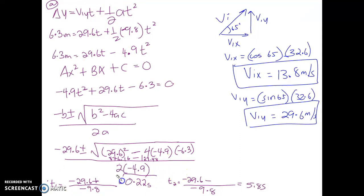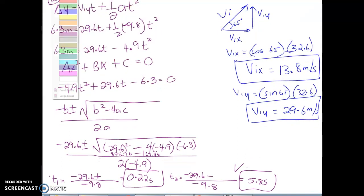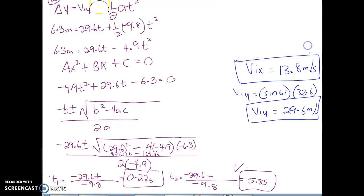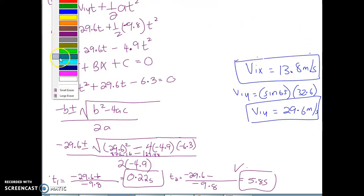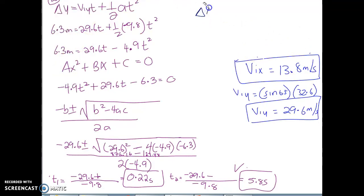All right, so those are our two times, and we're going to use our larger time right here to figure out what we need to do next. So once we've got our time, we're going to be figuring out our range, delta x, which equals VIX times t. VIX, of course, is 13.8 times 5.8. What do you get for your delta x?